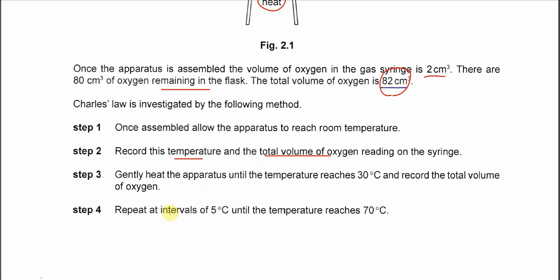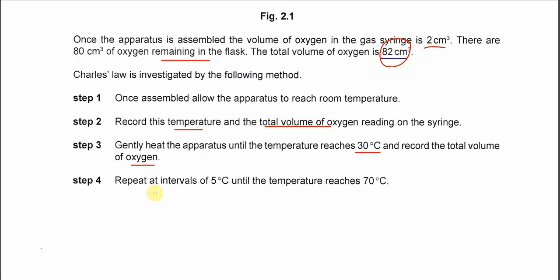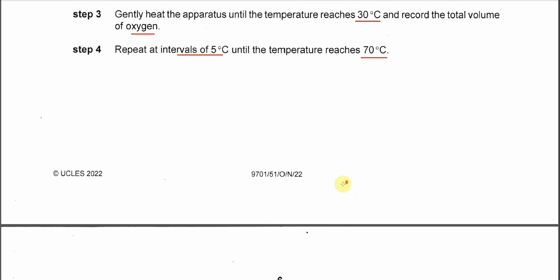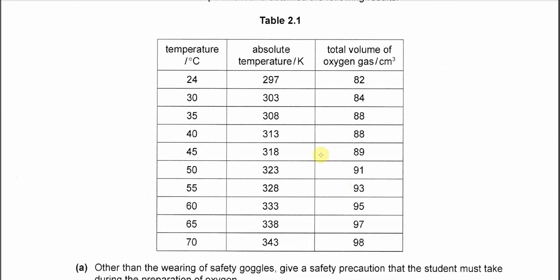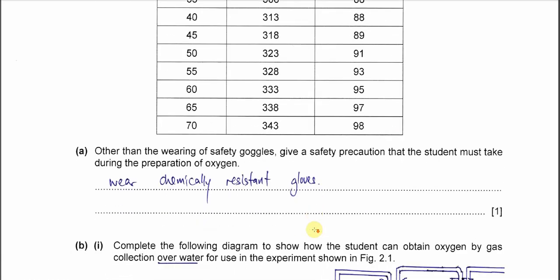After that, we need to change the temperature. Heat the apparatus until 30°C and record the volume of oxygen in the gas syringe. After that, we'll get this table. This table is from different temperatures, from initial until 70°C. This one is the temperature in Kelvin, so just plus 273. This is the total volume of oxygen gas measured, from 82 until 98. Use this to plot the graph. Before that, let's discuss part A.